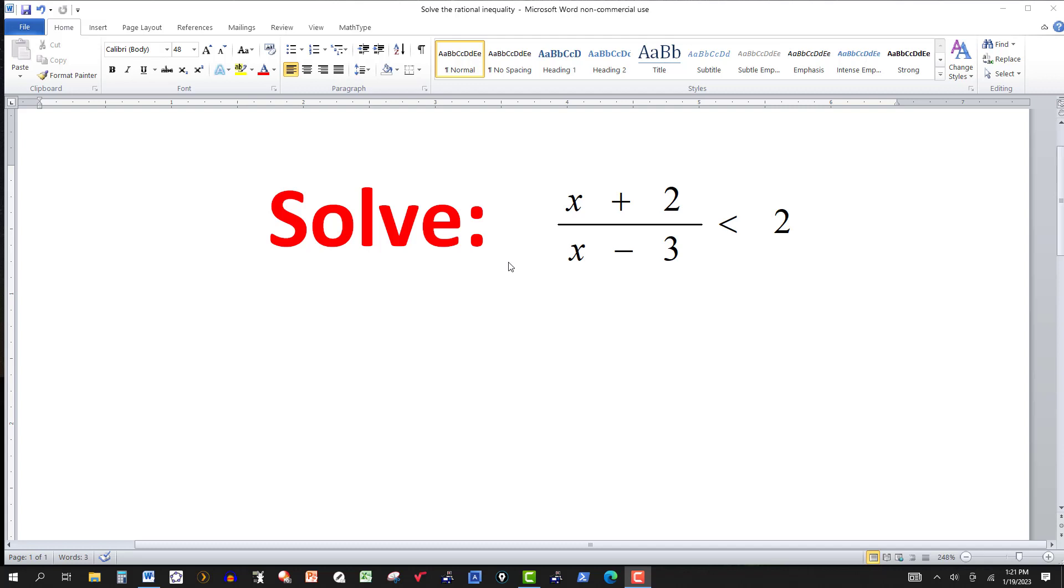In this video, we're going to solve one rational inequality using a procedure that I've used before in other videos. Here's what we want: we want one side of the inequality to be zero. Usually it will be the right side, but it really doesn't matter.